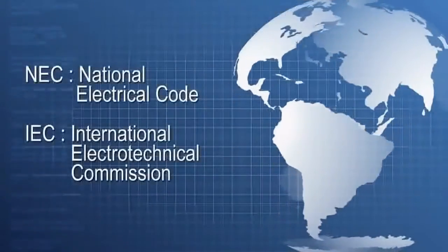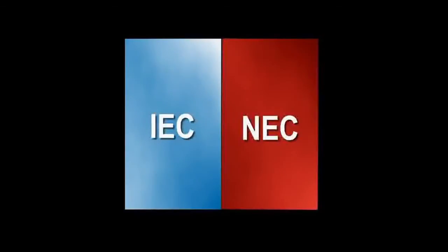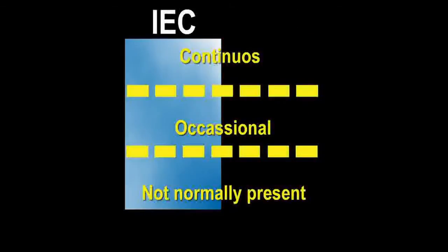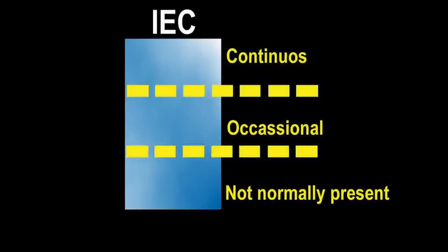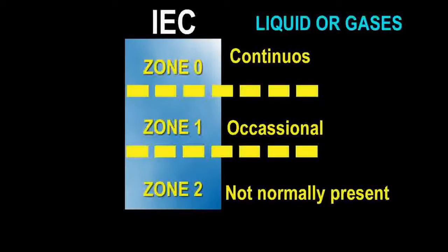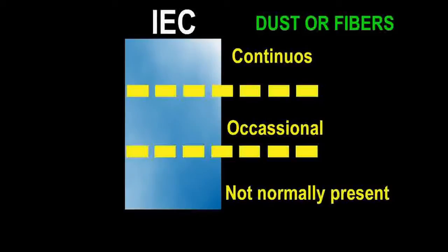The two predominant methods used for classification of hazardous environments are the NEC and IEC standards. Both classify the level of risk into three main categories: continuous, occasional, and not normally present — all three reflecting the likelihood of an explosive atmospheric condition. Within the IEC standard, the general risk categories are classified as zones, reflecting the physical material that could provide a potential fire or explosion. For liquids and gases, the area classifications are zone 0, zone 1, and zone 2. By altering the physical material to dust or fibers, the area classification changes to zone 20, zone 21, and zone 22.